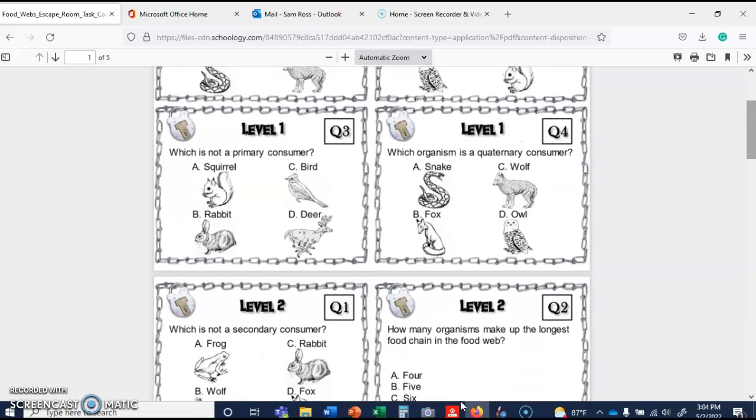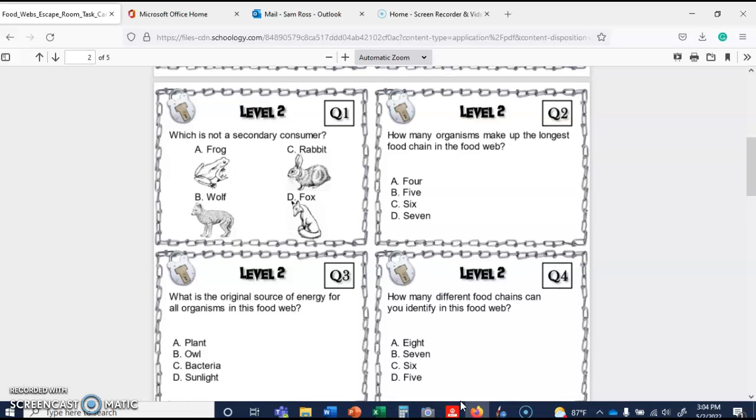Let's go ahead and scroll down and see what else we can work with. Which is not a secondary consumer. So like the rabbit is a primary consumer because it eats grass. So we're looking at stuff that, like this guy, frogs eat insects, wolves eat other prey, and foxes eat other prey. So I believe that this is C, since the rabbit is a primary consumer. How many organisms make up the longest food chain in the food web? So the answer to this, just because you may not know, is five. We're going to do an activity later where we have four levels, but five is the longest food chain in a food web.